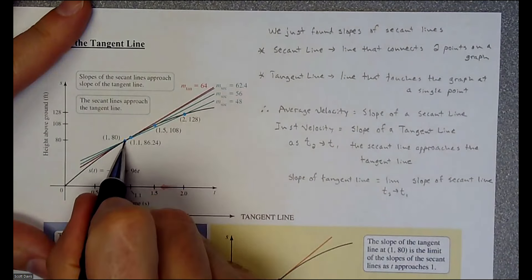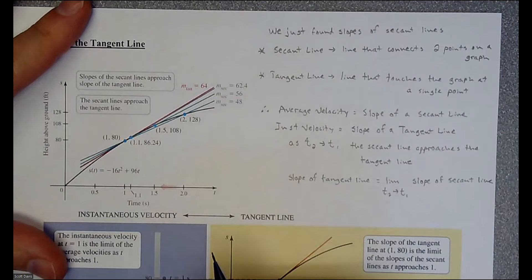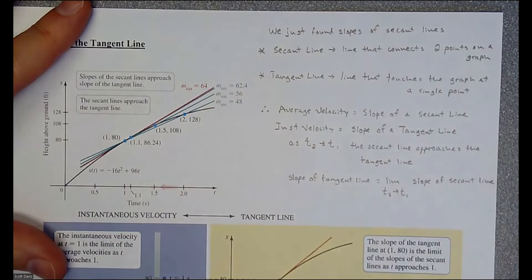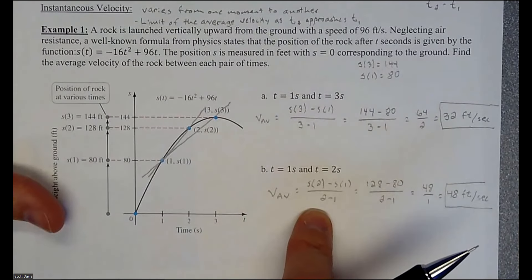So if you have, if this is your starting point, then any of these three points are creating these secant lines, right? And we found different slopes here. So when we found average velocity, we were finding the secant lines.